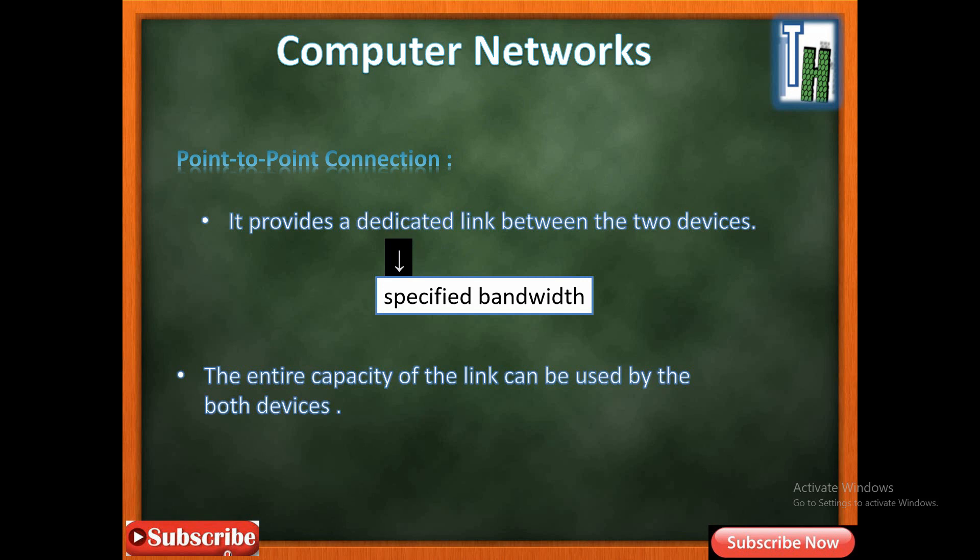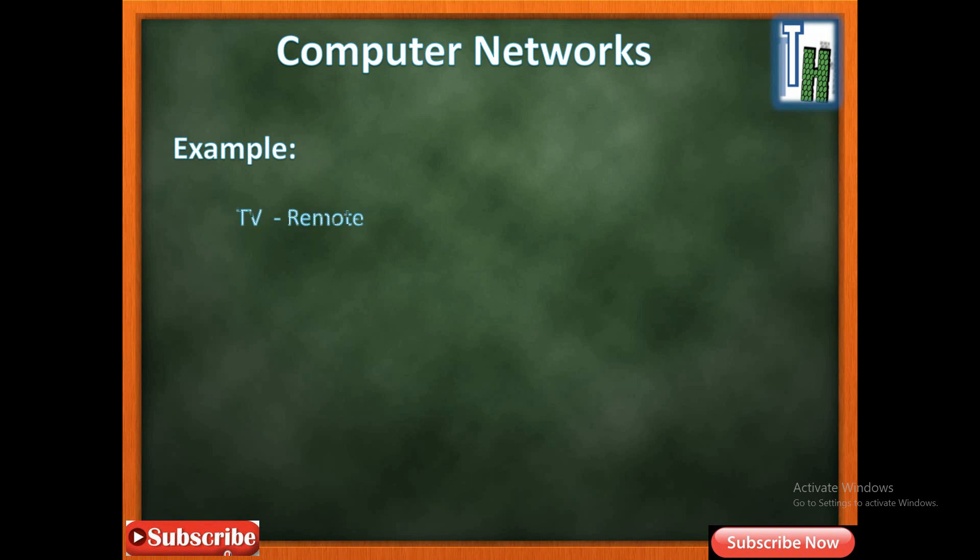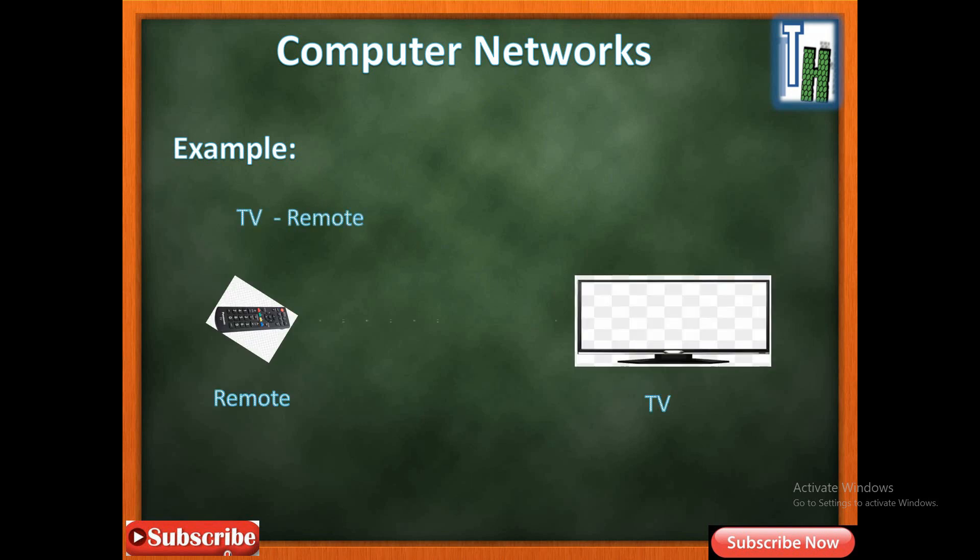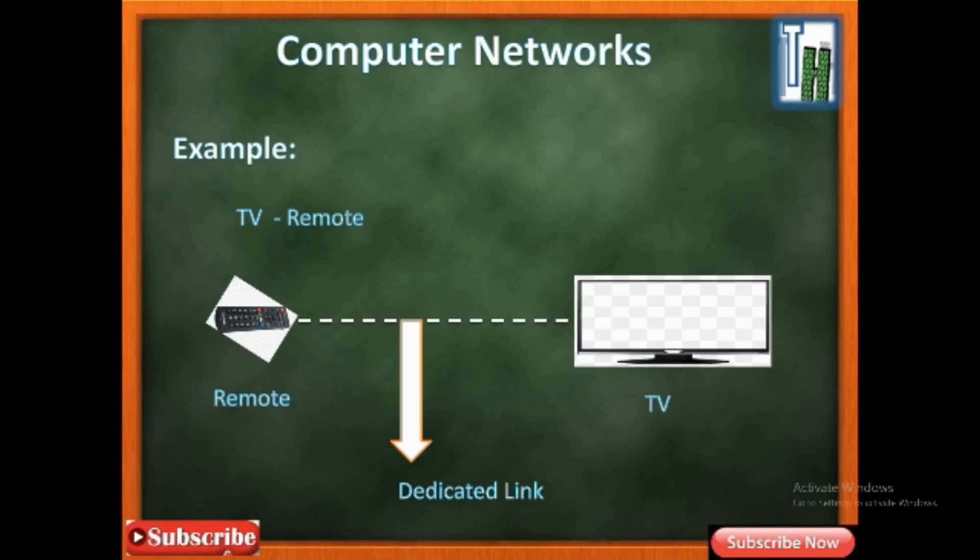Okay, let's look at one example to better understand the concept. Suppose there is a TV and a remote. If you want to change the channel, we press the button. Then the connection is established between the devices. That connection is IR, so it establishes a connection using a microwave or any other wave.